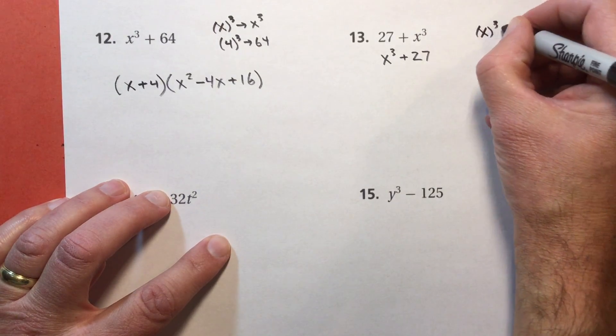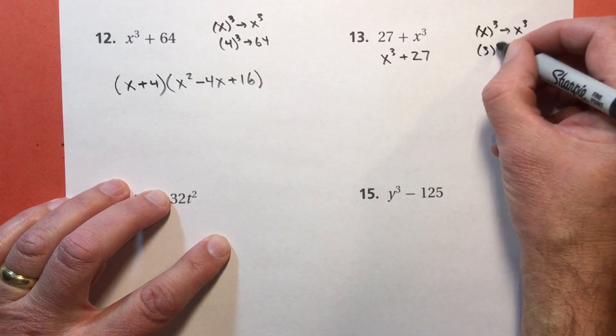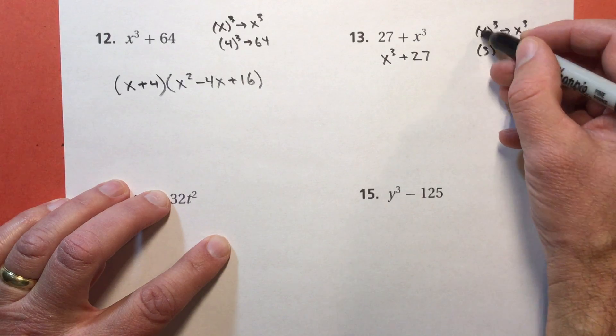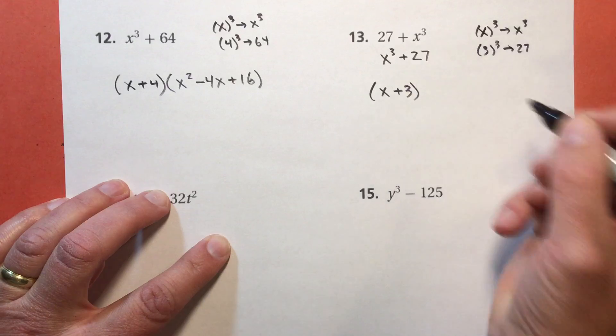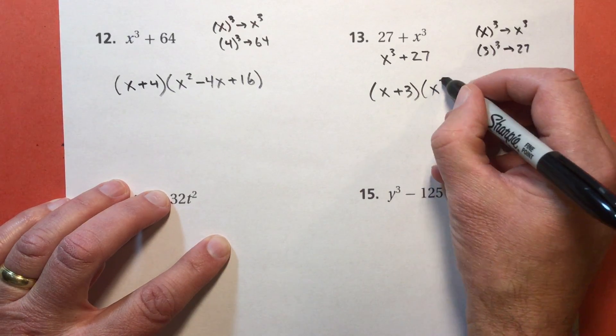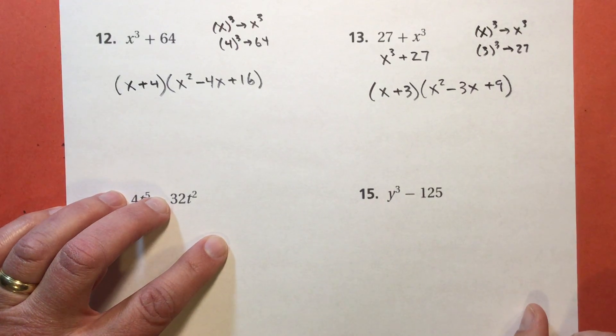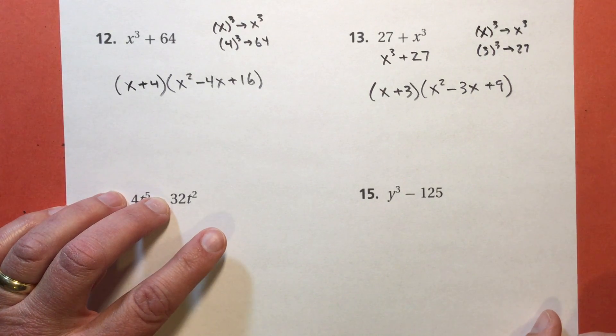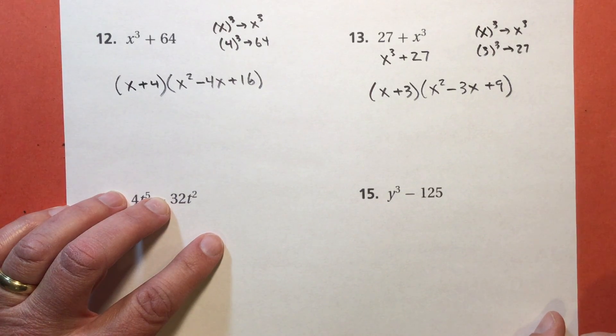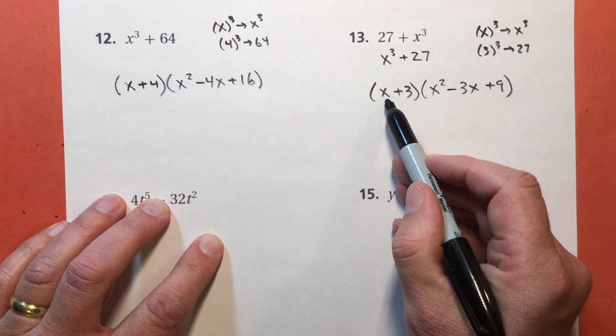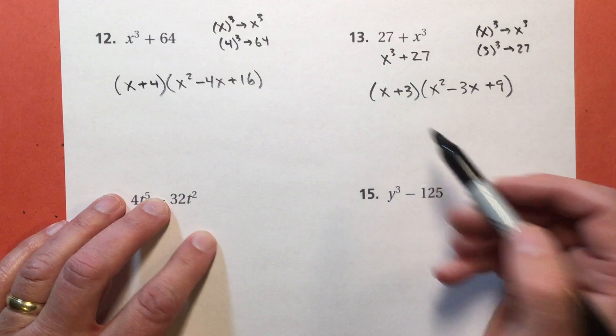I have x to the third power. That gives me my x to the third power, obviously. And this is 3 to the third power. So I'm going to be using x and 3. x plus 3 times x squared subtract 3x plus 9. And you know what? After a while, you're going to learn the pattern. It's going to become second nature to you. Because it's this thing squared, subtract both of them multiplied, and then that thing squared for this part.